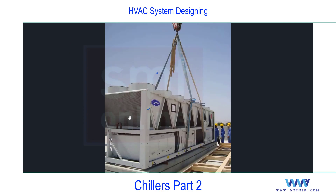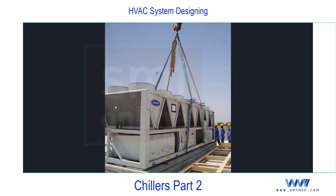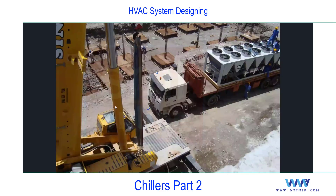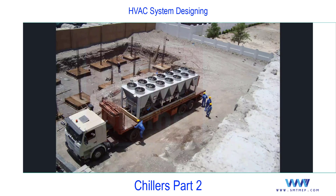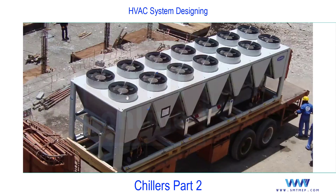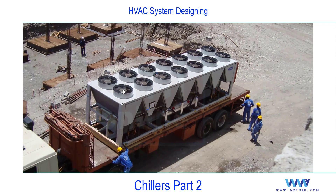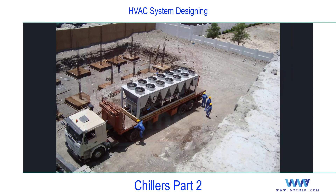A closer view shows the fins and tubes inside — this is a coil heat exchanger used as the condenser. From the top view you can verify the condenser fans used to cool the condenser. The vapor compression cycle is the same, but the construction is different.